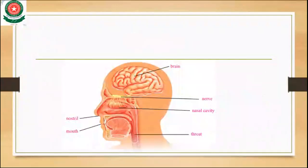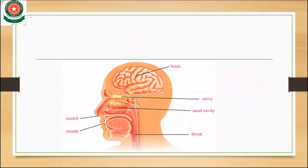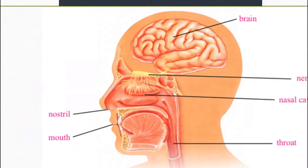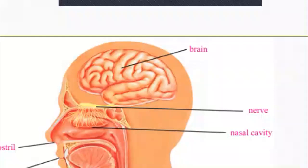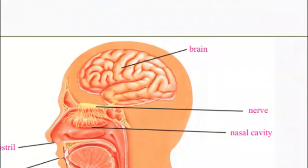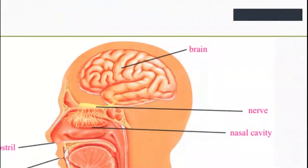This is the diagram of the nose, which shows the nostril, mouth, throat, nasal cavity, and nerve, connected at the top to the brain via the olfactory nerve. Interesting: smells contain tiny particles that break off the surface of things and float in the air.